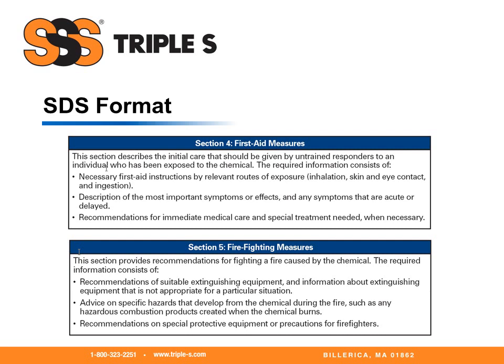Section five, firefighting measures. This section provides recommendations for fighting a fire caused by the chemical. The required information consists of recommendations of suitable extinguishing equipment, information about extinguishing equipment that is not appropriate for a particular situation, and advice on specific hazards that develop from the chemical during the fire, such as any hazardous combustion products created when the chemical burns.